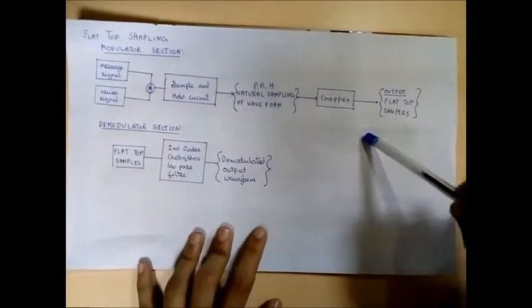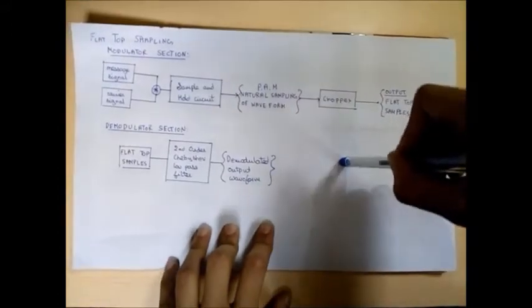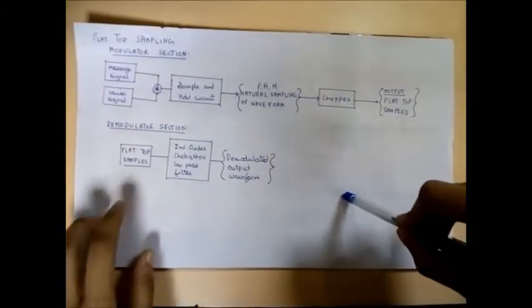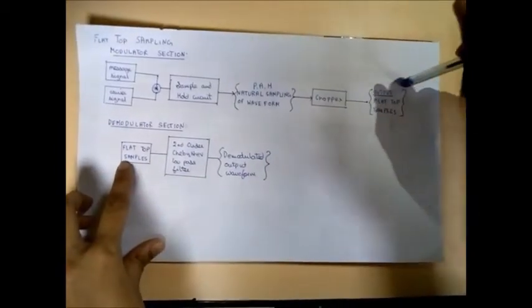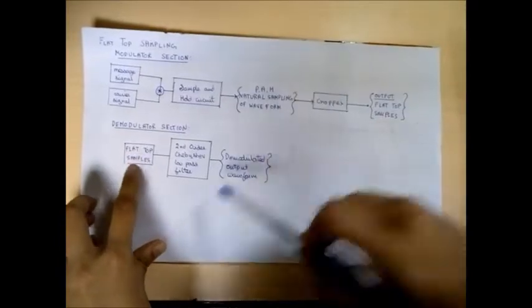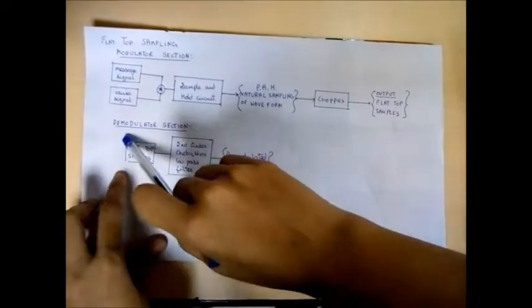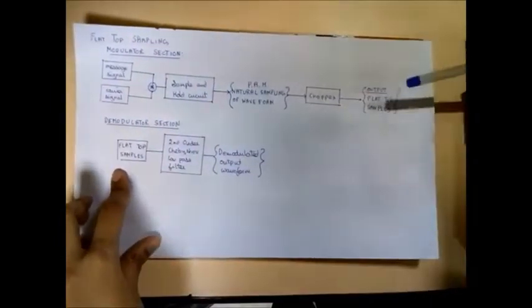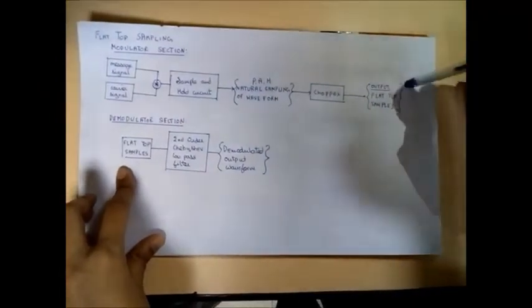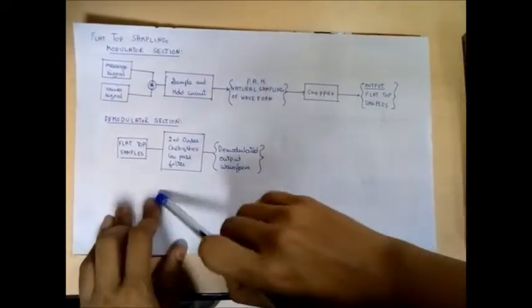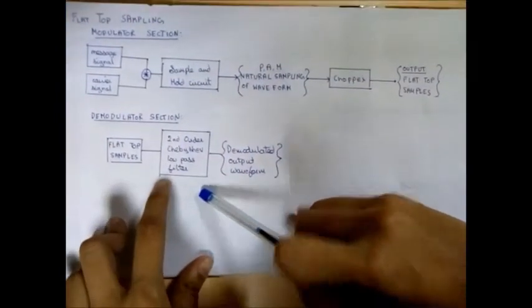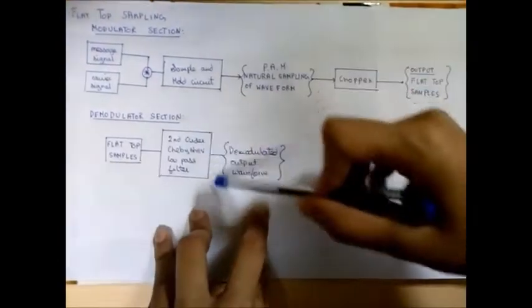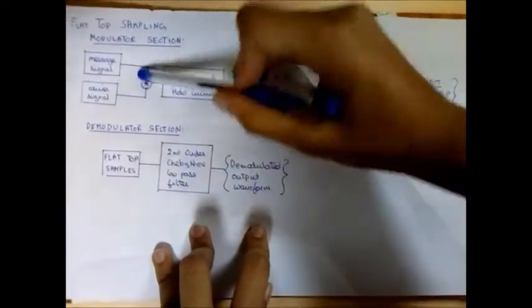Now we will do the demodulator section part of the flat-top sampling experiment. We will provide the flat-top samples obtained from the modulator section as our input to the demodulator. We will pass these flat-top samples through a second-order Chebyshev low-pass filter, and we will finally obtain our demodulated output waveform, which is the same as the original input — our message signal.